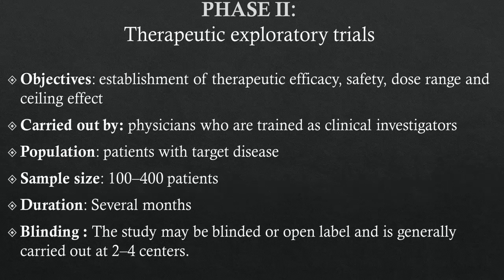Phase 2: Therapeutic Exploratory Trials. The primary aim is establishment of therapeutic efficacy, safety, dose range, and ceiling effect in a controlled setting. Tolerability and pharmacokinetics are studied as an extension of Phase 1. This is conducted by physicians who are trained as clinical investigators on 100 to 400 patients with the target disease, selected according to specific inclusion and exclusion criteria. This phase lasts for several months. The study may be blinded or open label and is generally carried out at 2 to 4 centers.